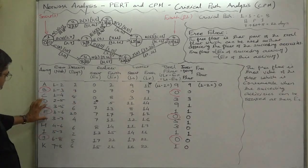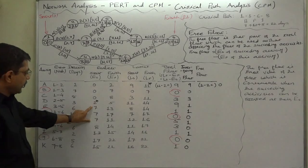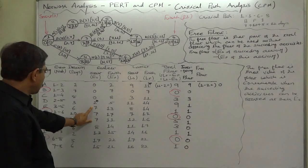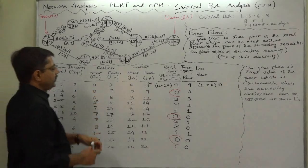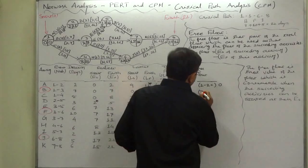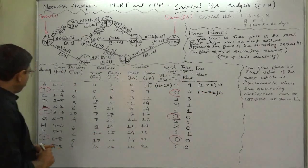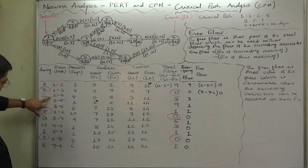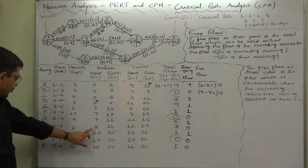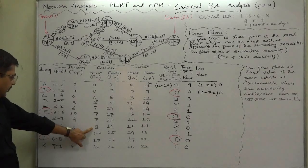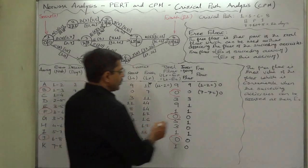In case of B, the succeeding activities are these 3 and their earliest start times are all 7, and the earliest finish time of B is also 7. So 7 minus 7 equals 0. In case of C, the succeeding activity at node 4 is H. The earliest start time of H is 8 and earliest finish time of C is 8, so 8 minus 8 equals 0.